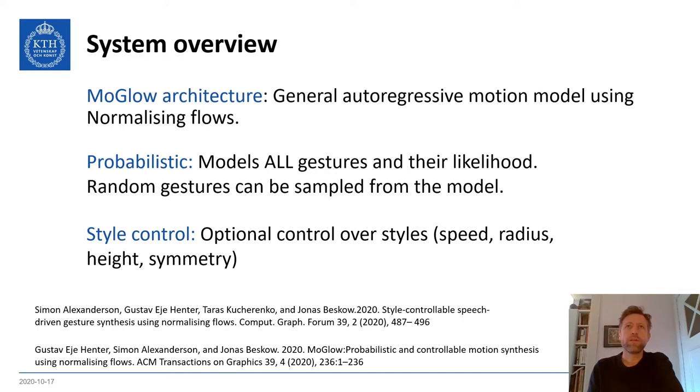Moglo is a general model for controllable motion synthesis. The model is probabilistic, which means that it does not only describe one possible outcome, but attempts to model all outcomes and how likely they are. This property has many interesting aspects for gesture synthesis, as people typically do not use the same gestures every time they say the same thing.